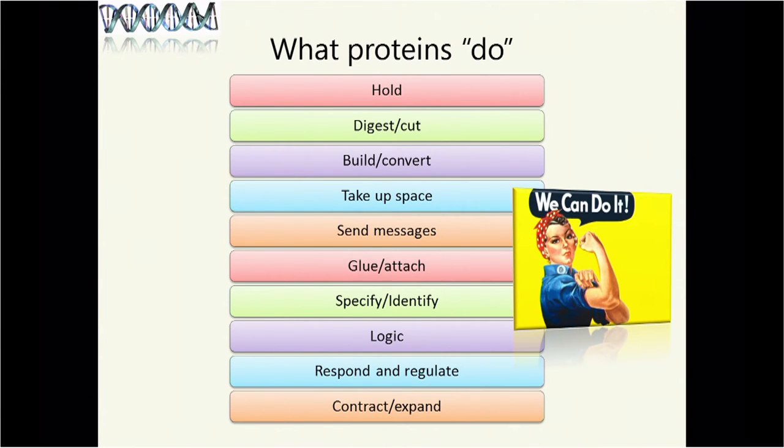What do proteins do? They hold, they digest, they cut, those are enzymes. They build, they convert one chemical into another chemical. They take up space. They send messages, they can send signals. They can glue or attach two cells together, they can glue or attach molecules together. They can specify, they can identify, think of antibodies. Antibodies are the things in the immune system that say, this is me, this is part of me. That thing that just got injected into the bloodstream isn't me, go kill it. Logic, there are ways that proteins can encode logic. They can respond and regulate, think of hormones. Some hormones are proteins, polypeptides. They can contract and expand, think of muscles.